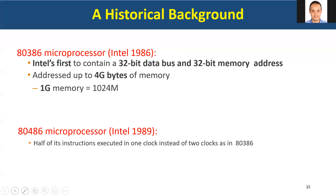Following those were the 80386 and 80486. The 80386 was Intel's first 32-bit microprocessor, addressing up to four gigabytes of memory — two major advancements: 32-bit instructions and 4 GB memory addressing. The 80486 improved on this by reducing many instructions from two clock cycles to one, which was a major achievement.